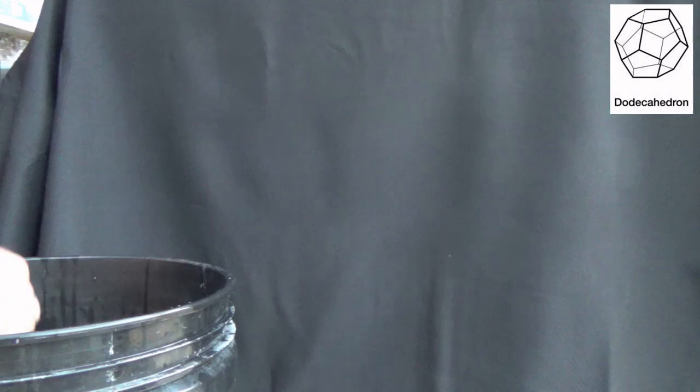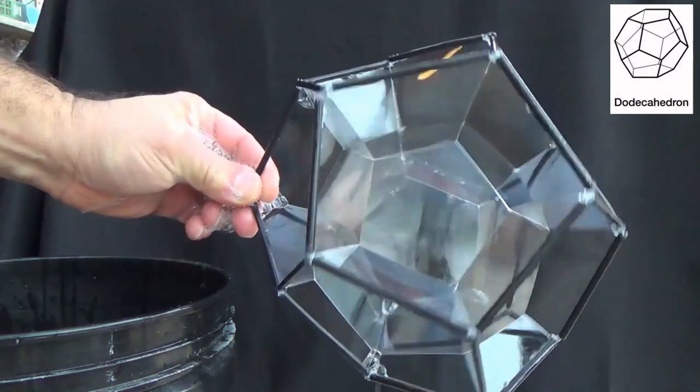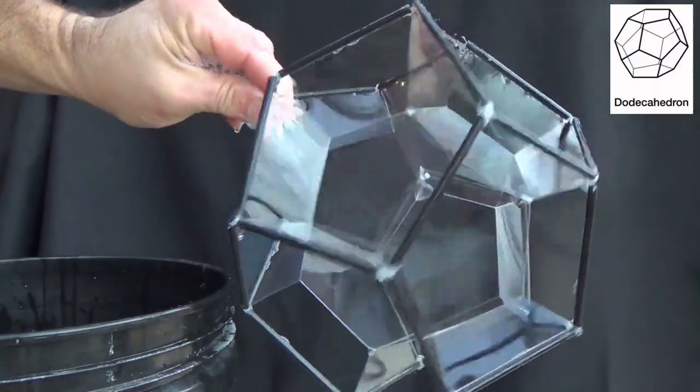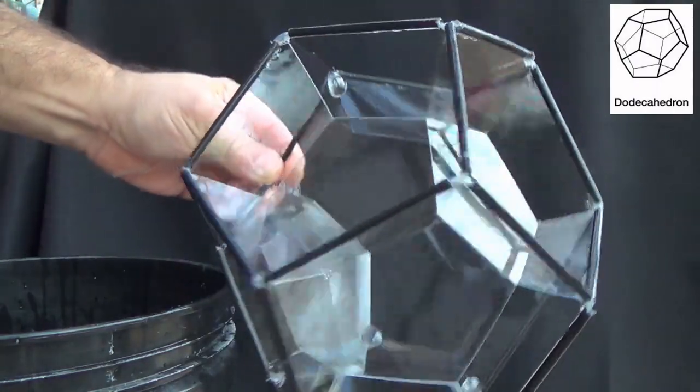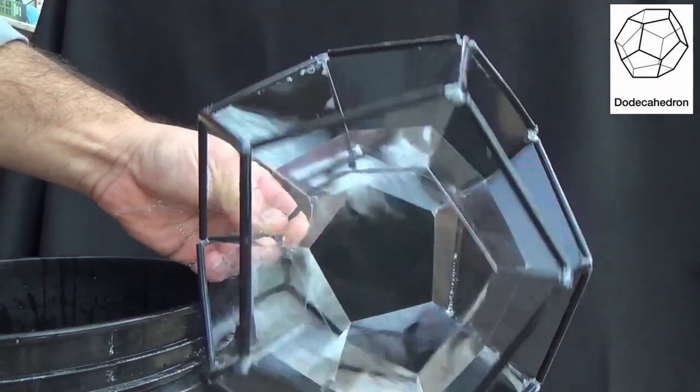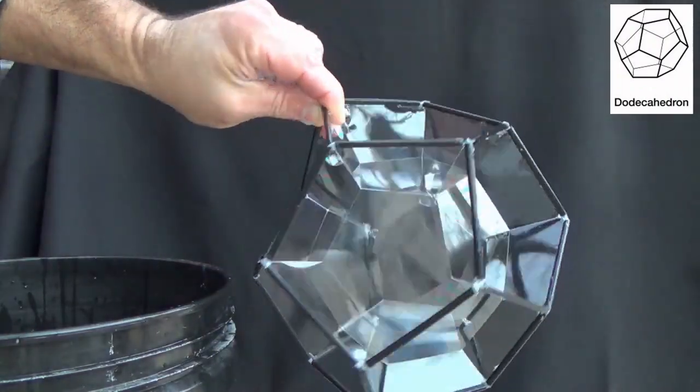This brings us to the dodecahedron. What's that going to look like when I dip it in there? Well, generally speaking, it gives you films that are not quite recognizable as anything. They don't meet in the middle. They meet off to the side. They tend to just form a bunch of pentagonal flat surfaces on the sides of it. But if you double dip it, as I just did there, and kind of capture a bubble, you can get this. That is a dodecahedron bubble trapped inside a dodecahedron frame.